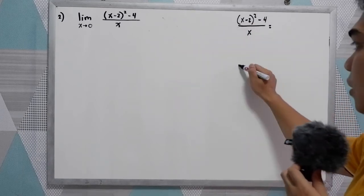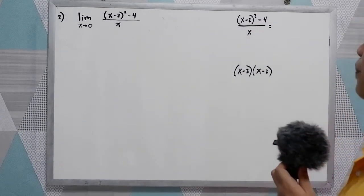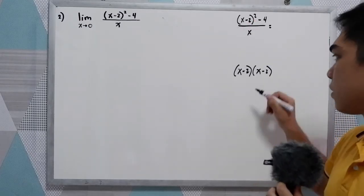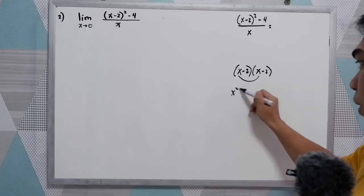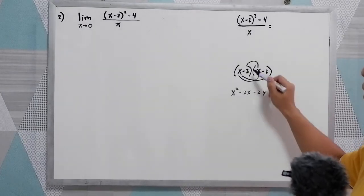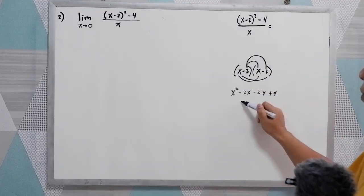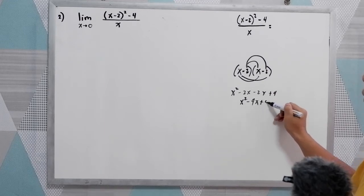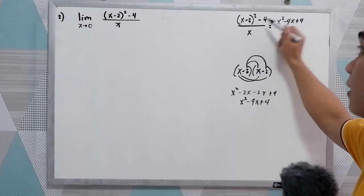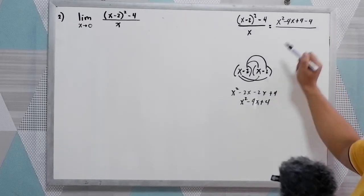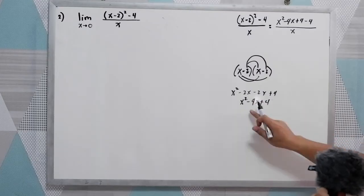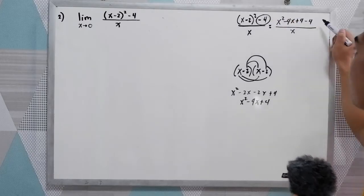We have (x minus 2) squared minus 4 all over x. We can simplify the numerator. So (x minus 2) squared equals (x minus 2)(x minus 2). Using the FOIL method: x times x is x squared; x times negative 2 is negative 2x; negative 2 times x is negative 2x; negative 2 times negative 2 is positive 4. So we get x squared minus 4x plus 4. Then minus 4, all over x. The value of (x minus 2) squared is x squared minus 4x plus 4, and we just copied negative 4.